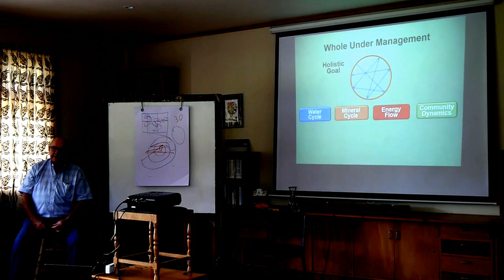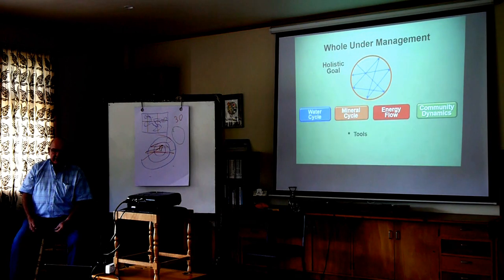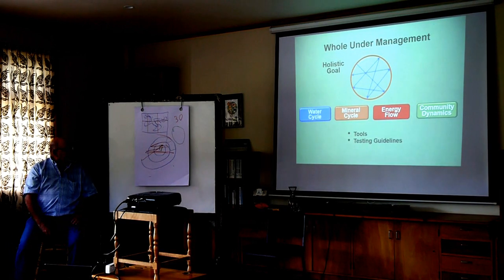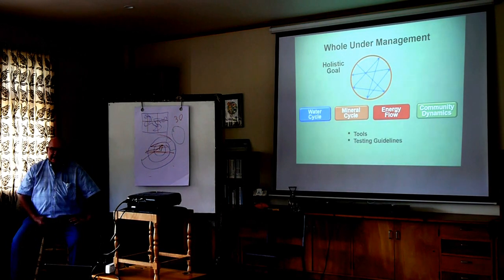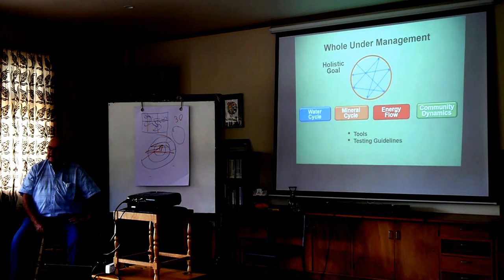No human can do anything to the soil without a tool. The two new tools are animal impact and grazing, which we've spoken about and will go into more depth. We then have the seven testing guidelines, and where decisions fail those testing guidelines is where we should monitor to make sure that the decision we're making achieves the outcome we want - and that is done with monitoring.